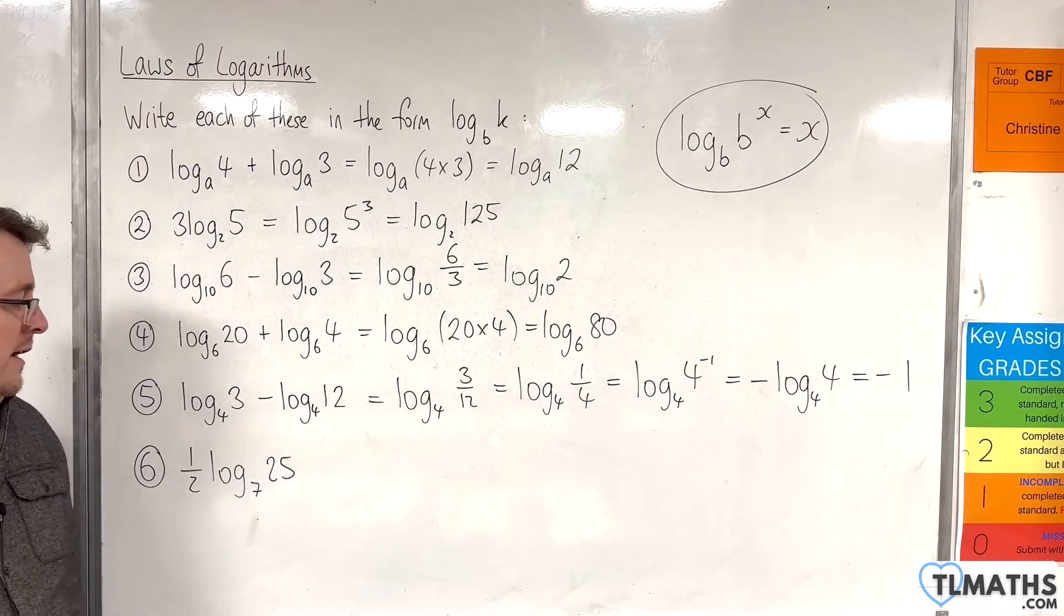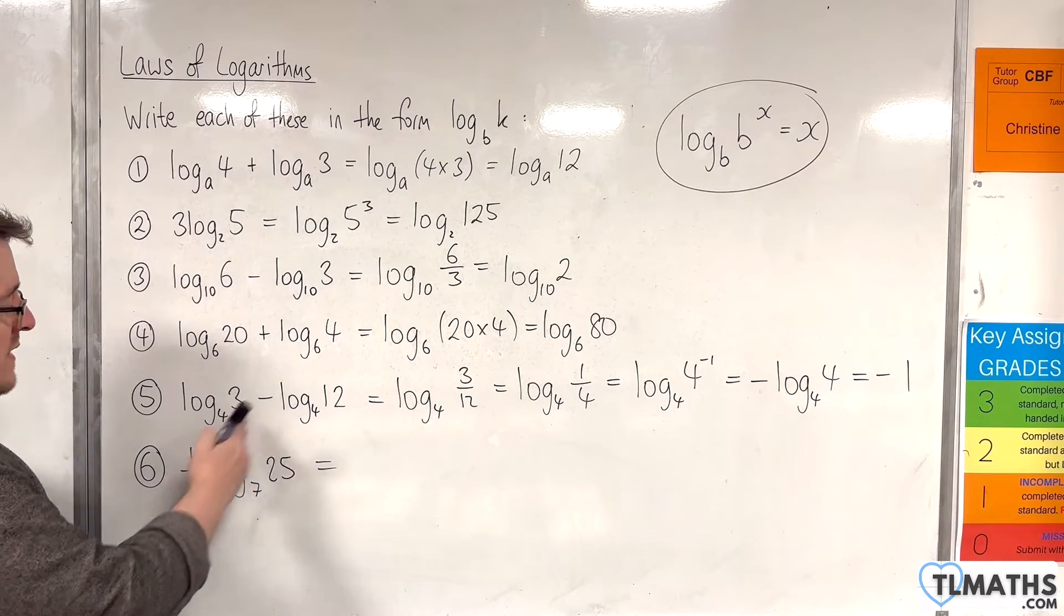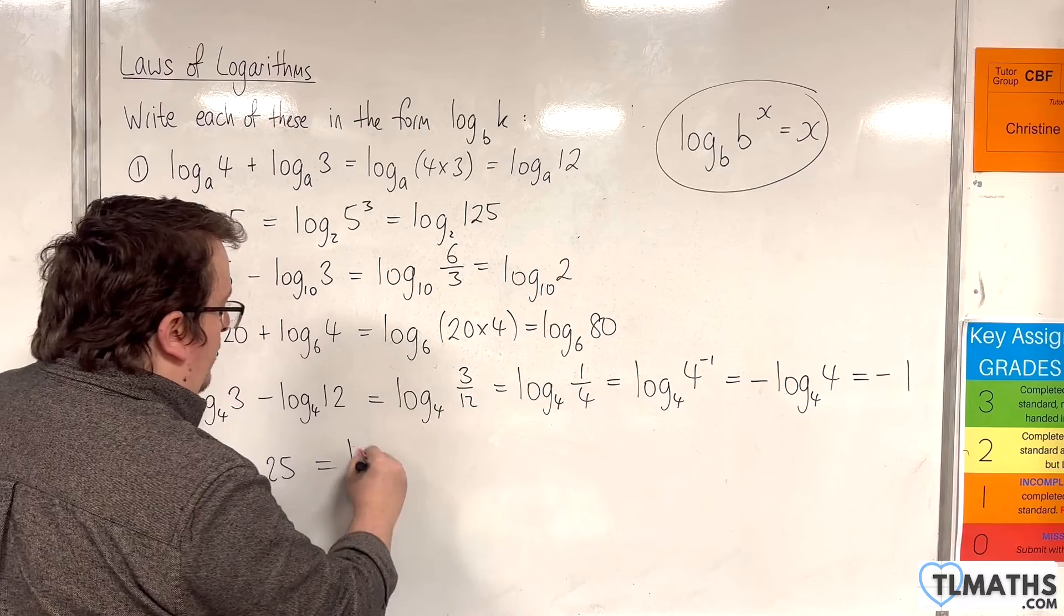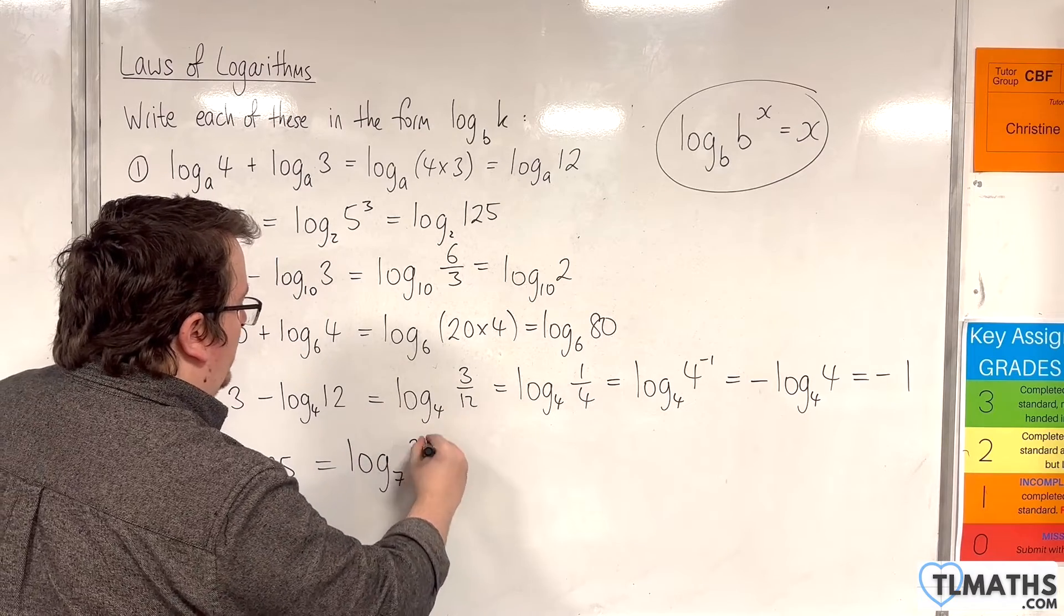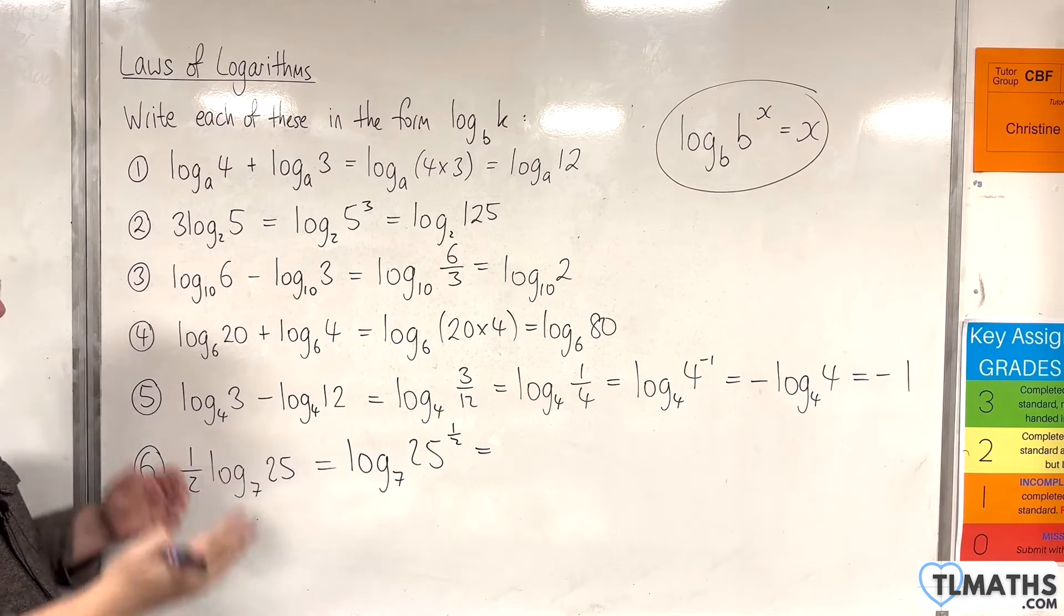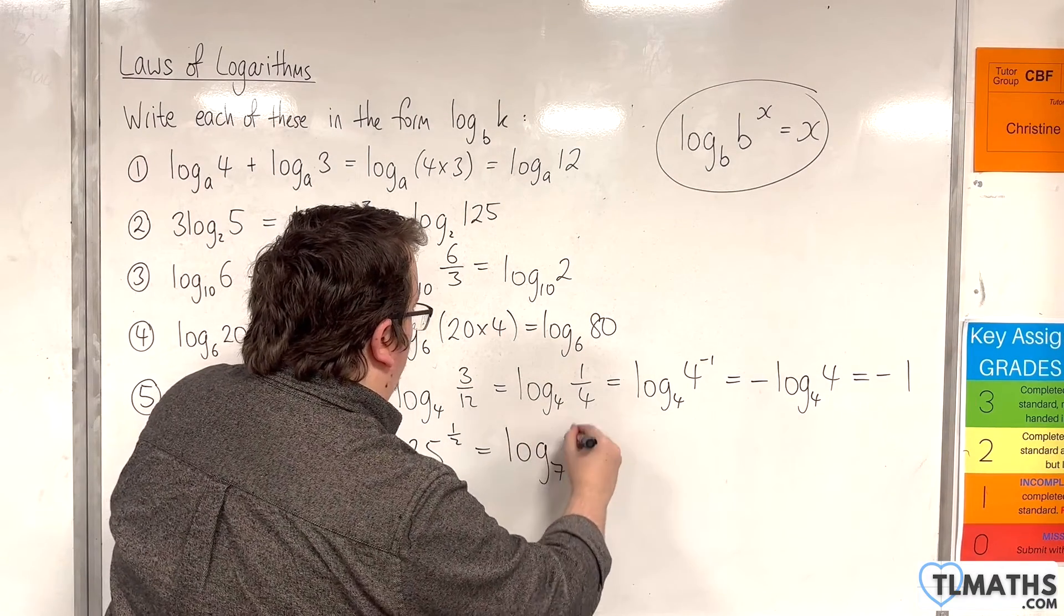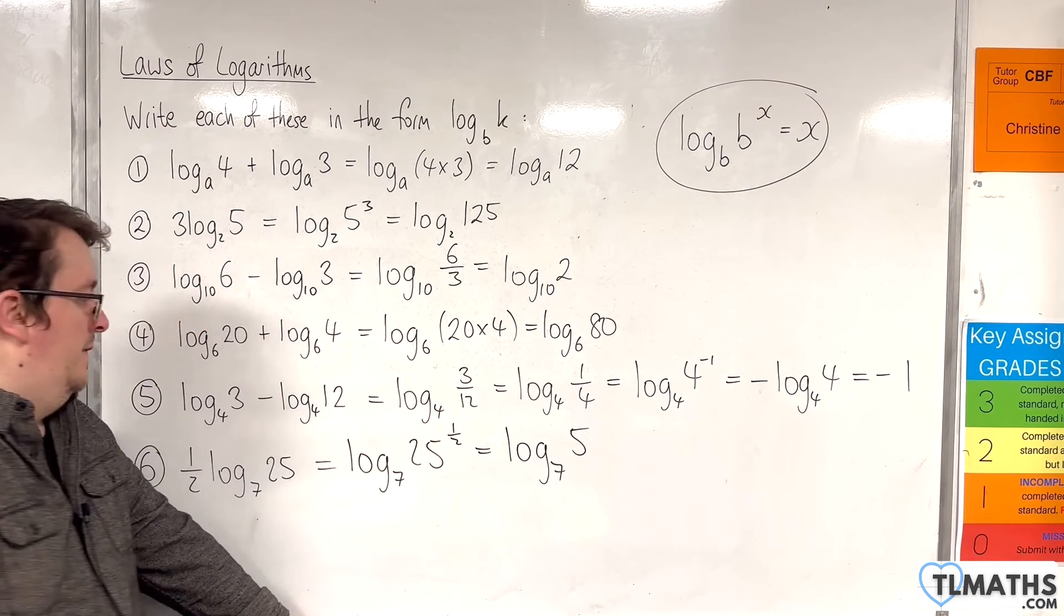Right, let's look at the last one. Number 6. So we've got the 1 half out the front. I'll bring that up to the power. So that's log base 7 of 25 to the power of a half. And 25 to the half is a square root of 25 which is 5. So log base 7 of 5. And that's us done.